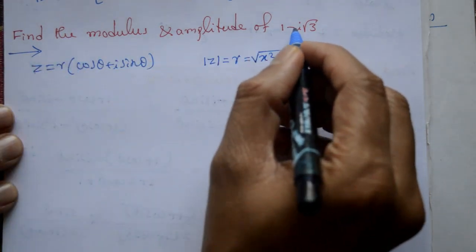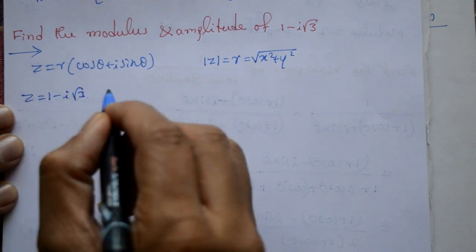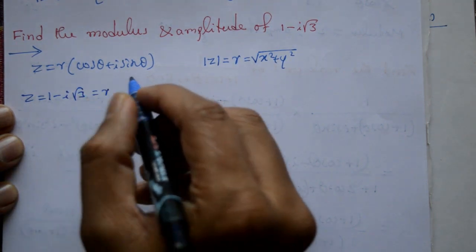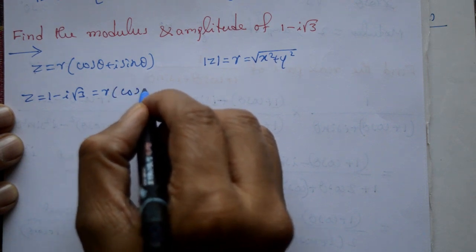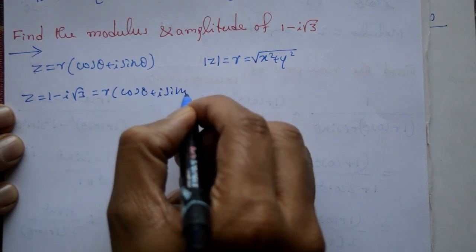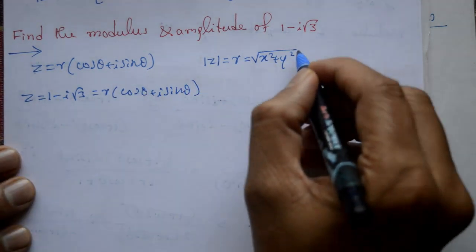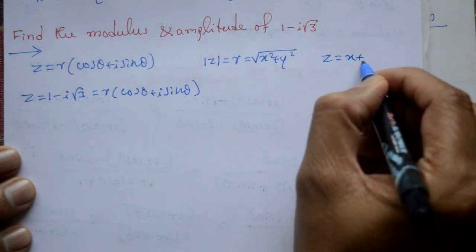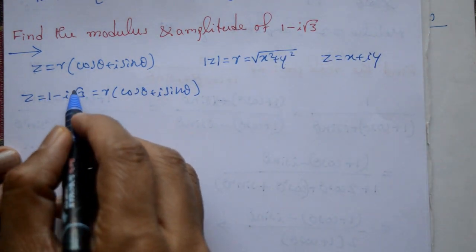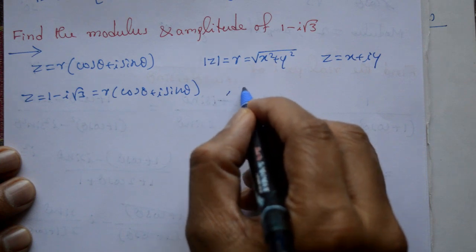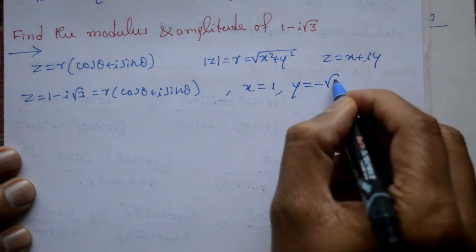See, the complex number given is z is equal to 1 minus i into root 3. That is r cos theta plus i sin theta. So z is equal to x plus iy. X kya hai? X is equal to 1. And y kya hai? Minus root 3.